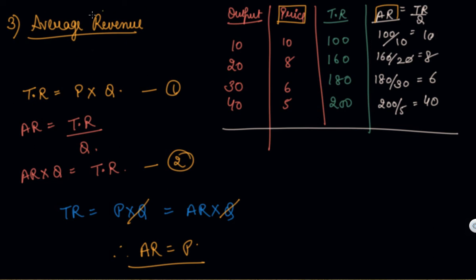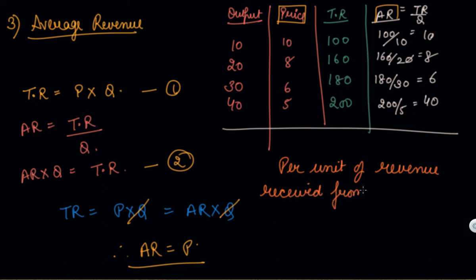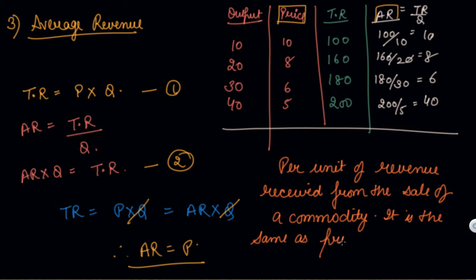So, average revenue is the per unit of revenue received from the sale of a commodity, and it is the same as the price of the commodity. We have proved that AR is equal to price. With this, we complete the video in which you have understood total revenue, marginal revenue, and average revenue.